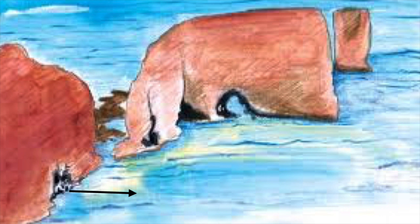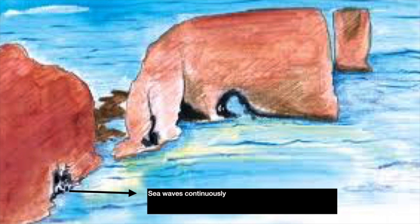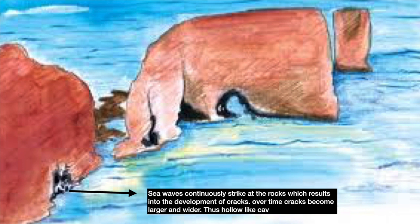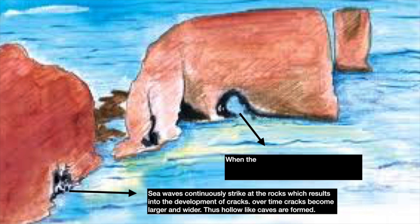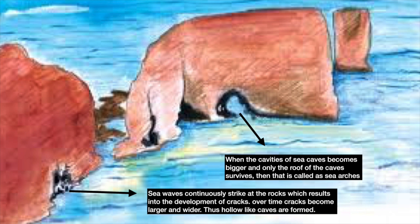Sea waves continuously strike at the rocks, which results in the development of cracks. Over time, these cracks become larger and wider, and hollow-like caves are formed. Now when these cavities of sea caves become larger and bigger and only the roof of the cave survives, that is called a sea arch, as shown in the figure.